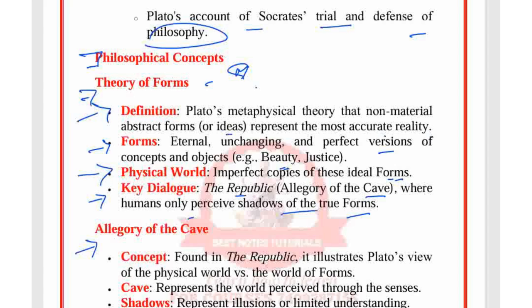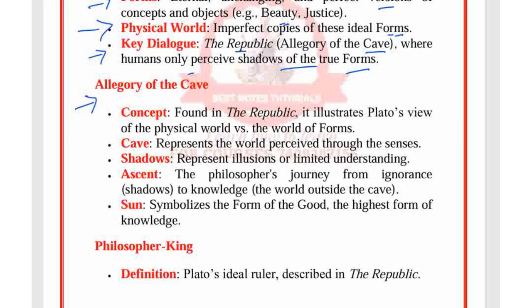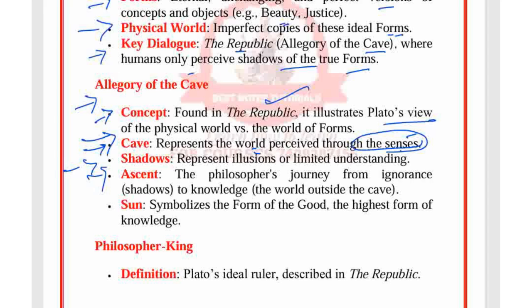The allegory of the cave, found in The Republic, illustrates Plato's views of the physical world versus the world of forms. The cave represents the world perceived through the senses. Shadows represent illusion or limited understanding. The philosopher's ascent represents the journey from ignorance and shadows to knowledge and the world outside the cave.